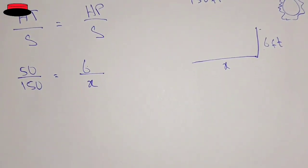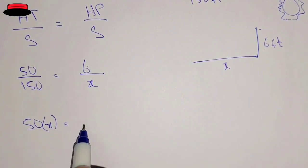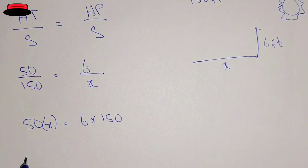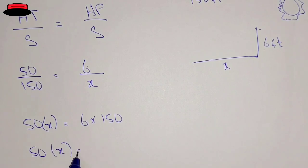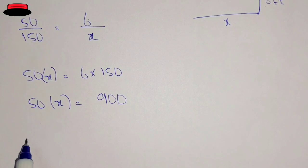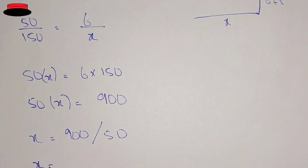Now we cross multiply both sides: 50 multiplied by x equals 6 multiplied by 150. So 50x equals 900. Therefore x equals 900 divided by 50, which gives us x equals 18 feet. That is the shadow of the person.